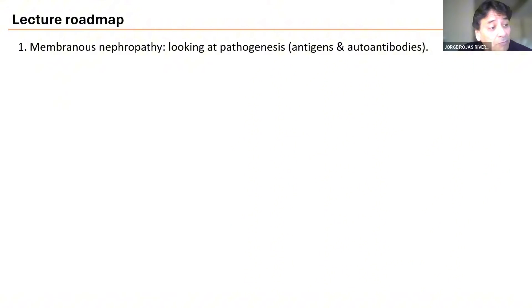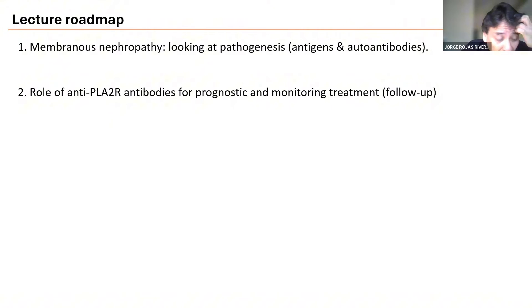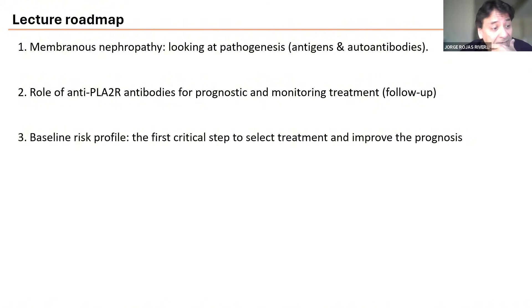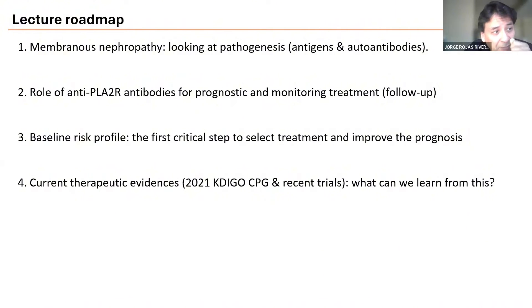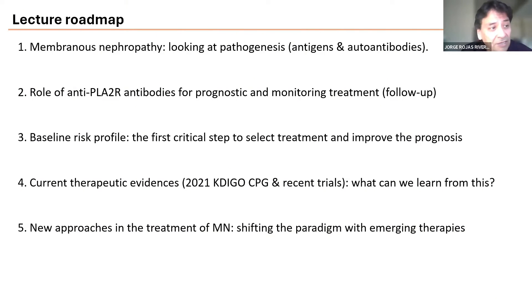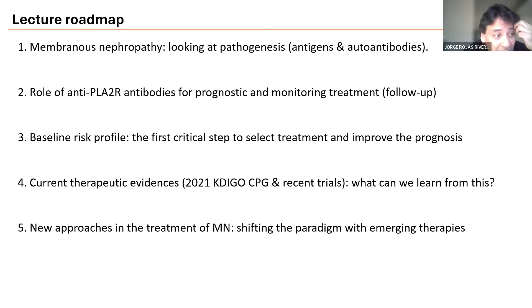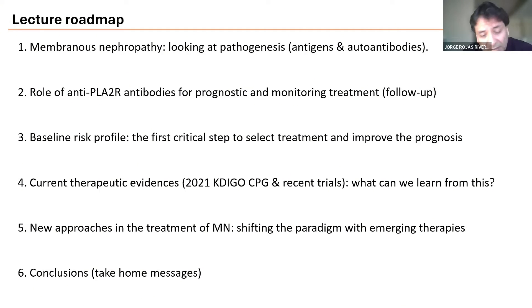This is my roadmap that I will follow in the present talk. We are going to look at the pathogenesis and some concepts of the new antigens and the current scenario. We will see the role of anti-PLA2R antibodies as a marker of prognosis and as a clinical tool to monitor the course of the disease during treatment. We will highlight the importance of establishing a baseline risk profile and nephroprotective treatment. We will make some reference to the KDIGO 2021 guidelines and the results of four of the most relevant and recent clinical trials. In the final part, we will mention two emerging therapies, which mainly focus on refractory cases of membranous nephropathy. And finally, we will give the conclusion and key messages to consider in clinical practice.